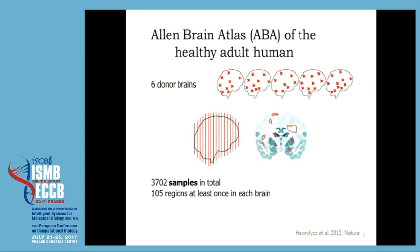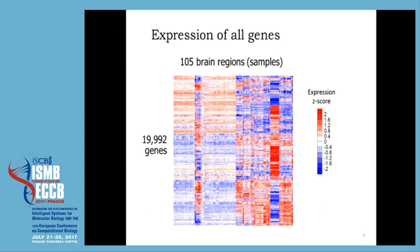We basically took the mean over the six brains. They used a microarray to measure genome-wide expression for each of these samples, for each of these 105 regions in the brain. This is what you get in the end: a heat map, probably familiar to most of you. In the rows you see the genes, in the columns the 105 brain regions, and in colors you see the z-scores of expression — if something is red, that gene has a higher-than-average expression in that part of the brain.